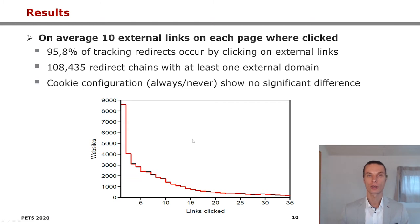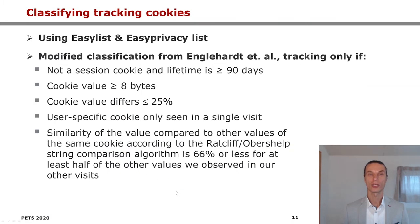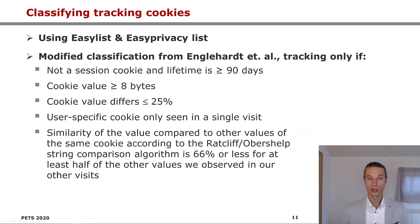The cookie configuration — always or never — showed no significant difference in the amount of links being opened. We initially thought trackers might add more external tracking links depending on the cookie setting; this was not the case. To classify tracking cookies, we used the EasyList and EasyPrivacy list, as well as a modified classification suggested by Englehardt et al., where a cookie is a tracker if: it's not a session cookie and the lifetime is longer than 90 days, the cookie value is larger than 8 bytes, the different cookie values observed during the crawl differ by at most 25%, and the cookie was only seen in a single visit. Also, the similarity of values compared to other values of the same cookie, according to the Ratcliff-Obershelp string comparison algorithm, is 66 or less for at least half of the other values observed.